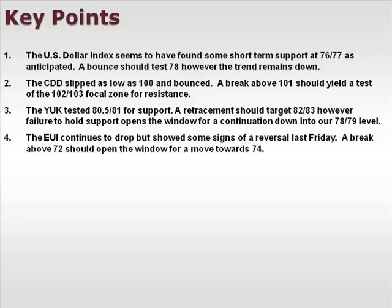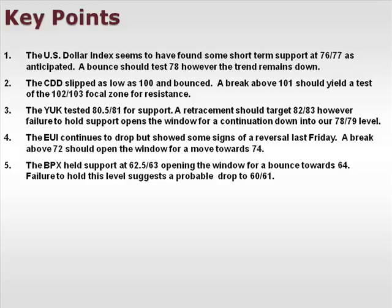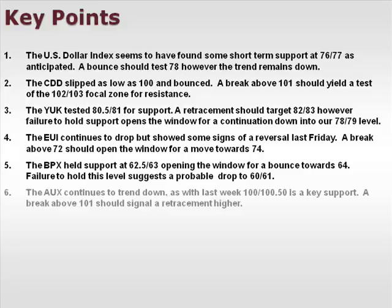The EUI continues to drop but showed some signs of a reversal last Friday. A break above 72 opens the window for a move towards 74. The BPX held support at 62.5-63, opening the window for a bounce towards 64; failure to hold 62.5-63 suggests a probable drop to 60-61. The AUX continues to trend to the downside — 100-100.5 is a key support level, and a break above 101 should signal a retracement higher.